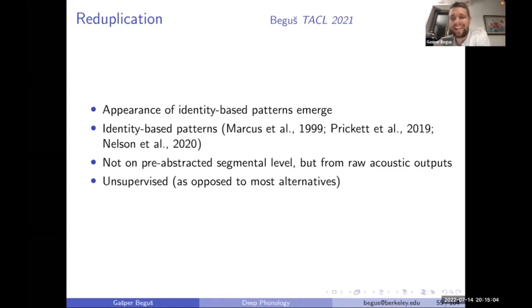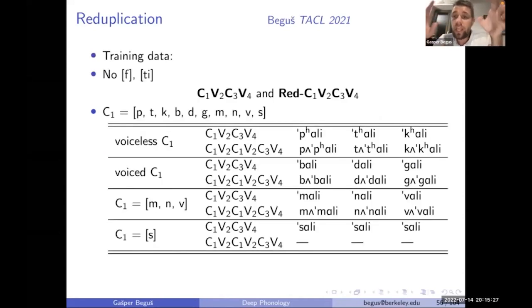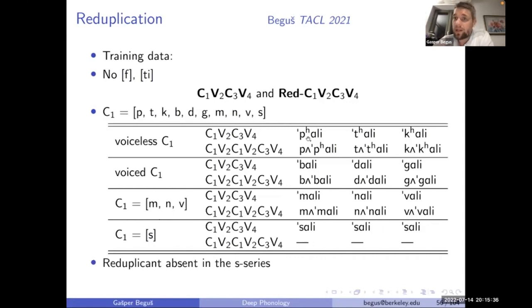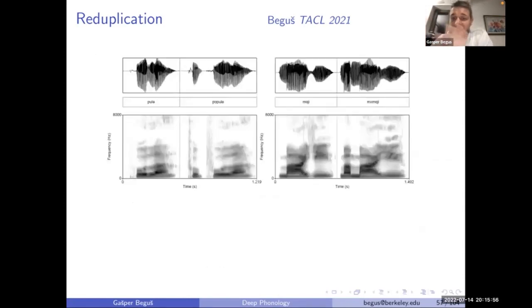Before that, a word on reduplication. Reduplication has been widely discussed because it's a very complex process, and it's long been thought that neural networks cannot do it. Kids are very good at it. Most proposals claiming it can be done in sequence-to-sequence models still work with phonemes or features — abstract representations. Here we can test the networks by feeding raw data: I recorded a speaker saying about 1,000 reduplicated and unreduplicated words — 'made', 'pamade', 'bali', 'babali', 'mali', 'mamali' — withholding S-initial words which were never reduplicated.